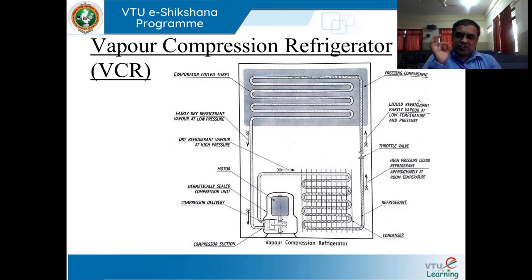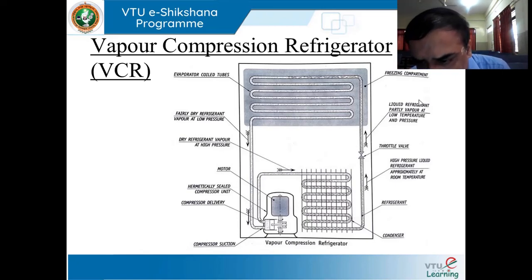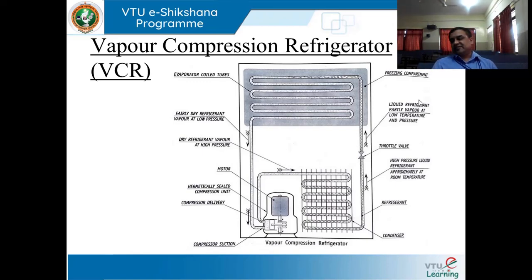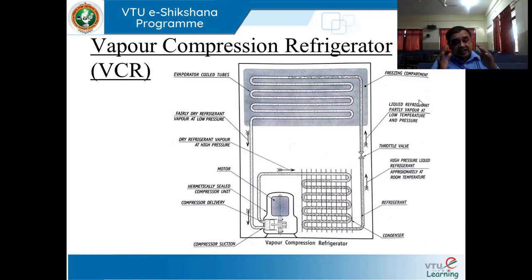Each and every part representing this schematic has been discussed. This is what the action of a vapor compression refrigeration system looks like. It was first conceived in 1805 by Sir Oliver Evans, who is regarded as the father of refrigeration systems.